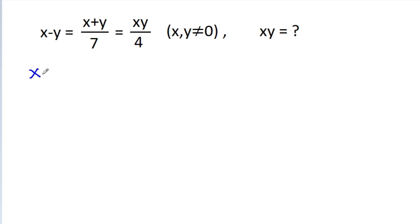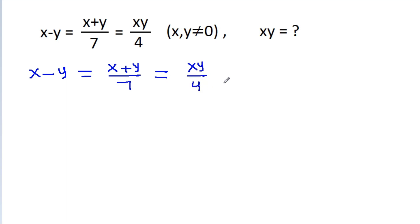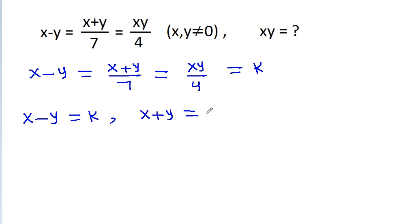We have given that x/y is equal to (x+y)/7 is equal to (x-y)/4. Suppose it is equal to k, then we will get x/y is equal to k, and (x+y) is equal to 7k, and (x-y) is equal to 4k.